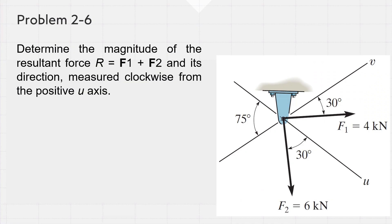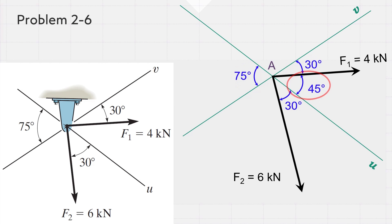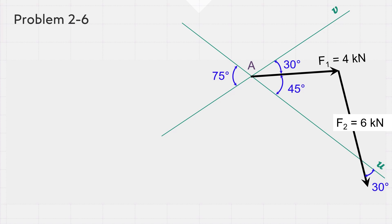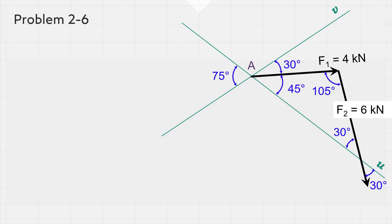Let us solve problem 2-6. For the system of forces shown in this figure, determine the magnitude of the resultant force R of the two forces F1 and F2, then find its direction measured clockwise from the positive U-axis. As usual, the free-body diagram has to be drawn as shown. Since the angle between the U-axis and the V-axis is 75 degrees and the angle between F1 and the V-axis is 30 degrees, then the angle between F1 and the U-axis is 45 degrees. Next, move F2 so the tail of the arrow representing this force is concurrent with the head of the arrow representing F1. In this triangle, we know the measure of two angles: one is 45 degrees and the other is 30 degrees, and their summation is 75. Consequently, the measure of the third angle is 180 minus 75, equals 105 degrees.